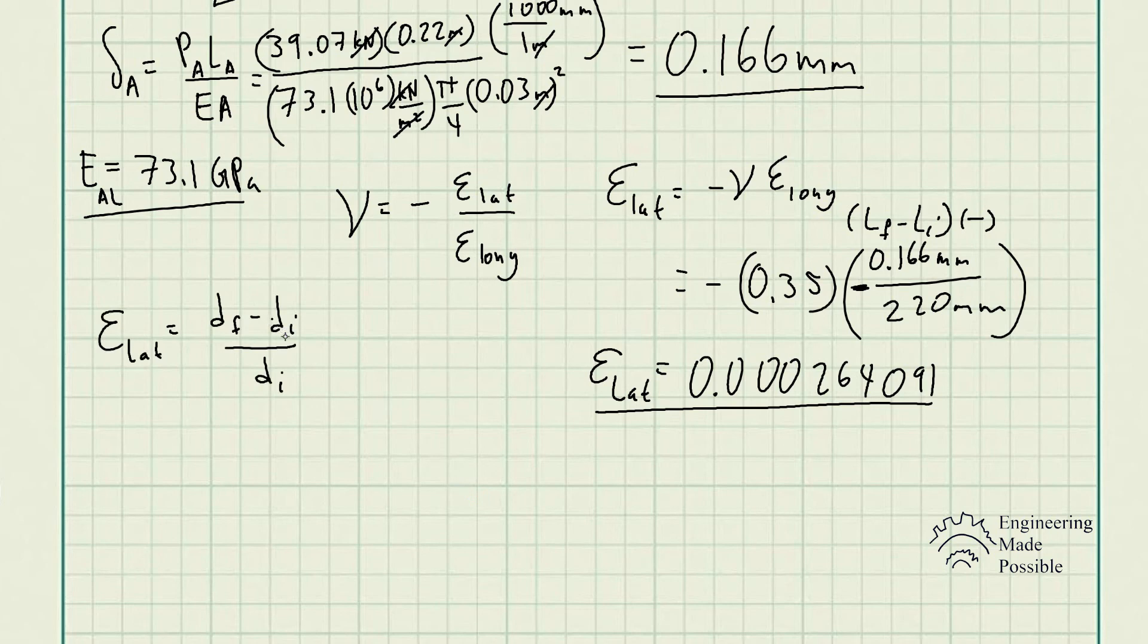Keep in mind, the lateral strain is similar to the longitudinal strain. In this case, the lateral we're talking about the cylinder would be the final diameter minus the initial diameter divided by that initial or original diameter. Now we could go ahead and manipulate this to finally solve for what the final diameter of this cylinder is once it has deformed. So that final diameter is equal to that lateral strain times the initial diameter plus the initial diameter.